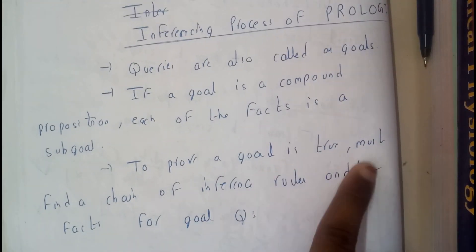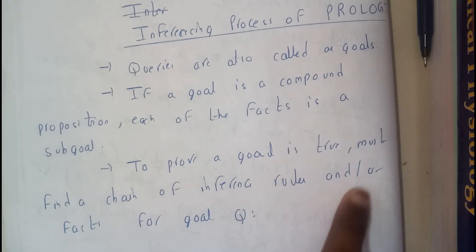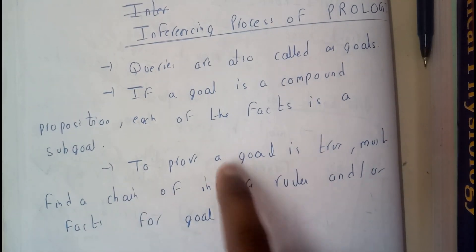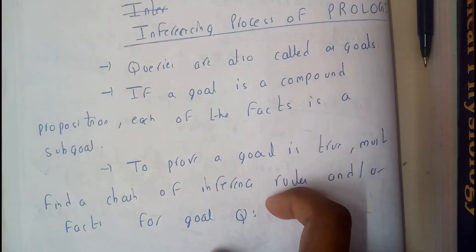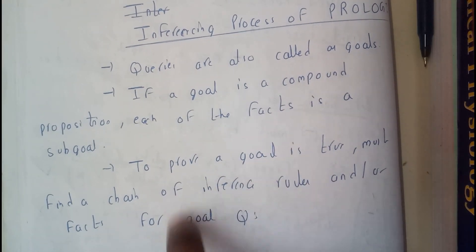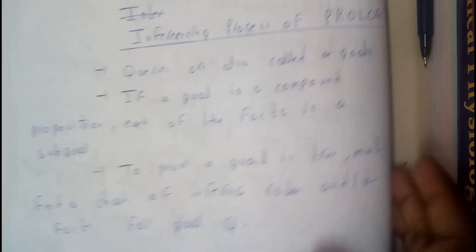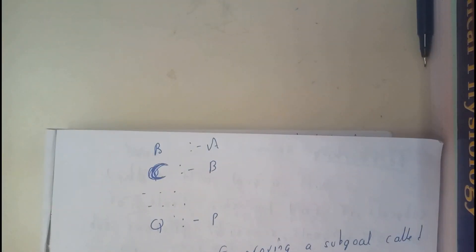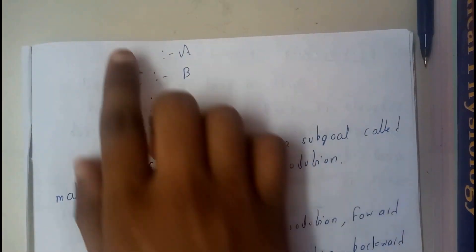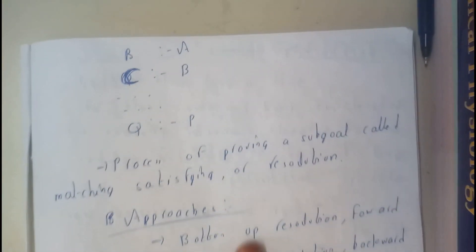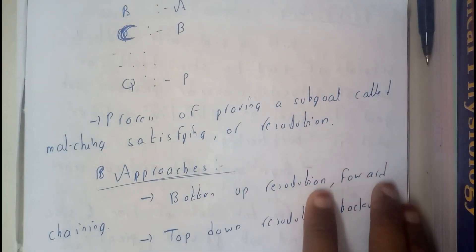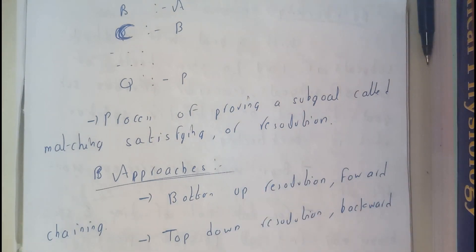To prove a goal is true, we must find the chain of inferencing rules and facts for a goal. If we have an inferencing goal, we need to check each and every proposition according to that chain — if everything is true, then the final result will be true. For example, if B is defined by A, and C is defined by B and Q. The process of proving a sub-goal is called matching, satisfying, or resolution.